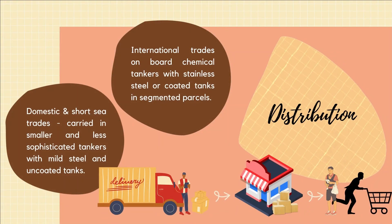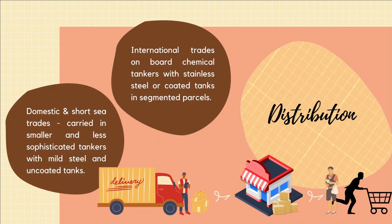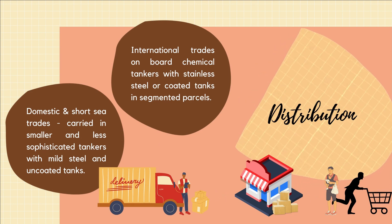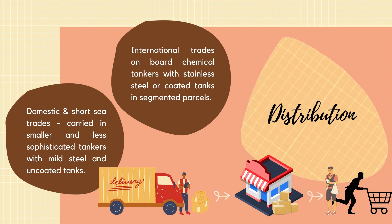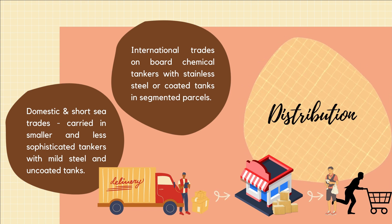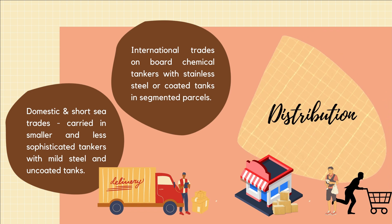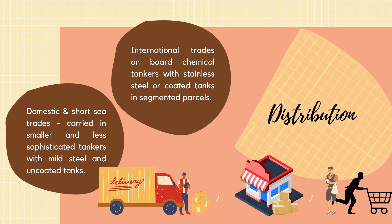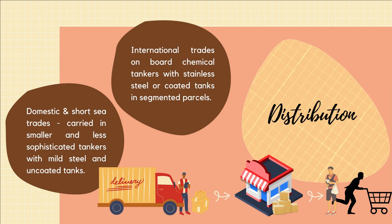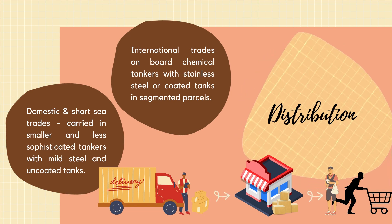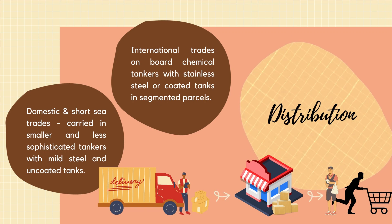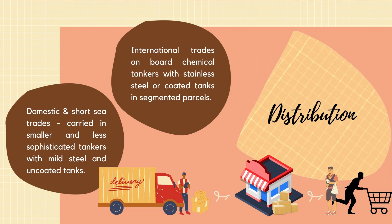The third phase in the cooking oil life cycle is distribution. Palm oil is involved in both international and domestic logistics trade. In international trade, vegetable palm oil is transported on board chemical tankers with stainless steel or coated tanks, while in domestic and short-sea trades it is often carried in smaller tankers with mild steel and uncoated tanks. The packed cooking oil is distributed by lorry to supermarkets, where consumers purchase it.